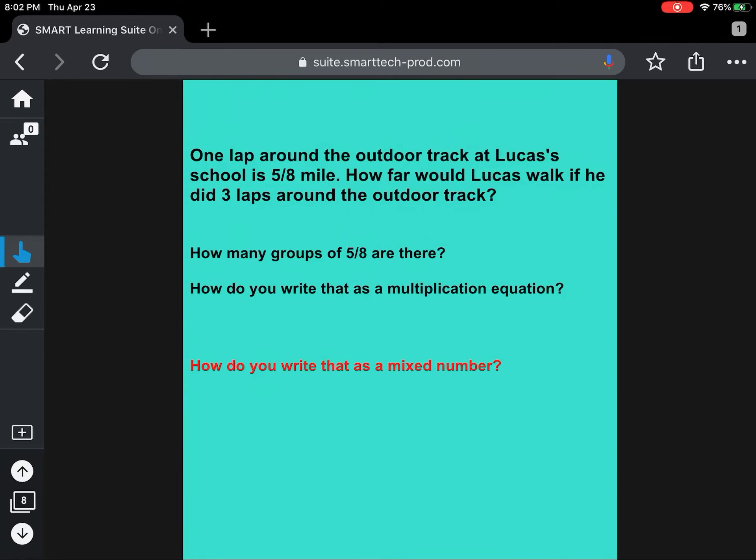So the question they ask, how far would Lucas walk if he did three laps around the outdoor track? We're talking three laps at 5/8 of a mile for each lap. The next question says, how many groups of 5/8 are there?